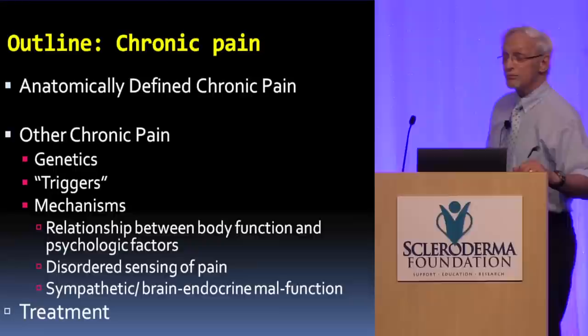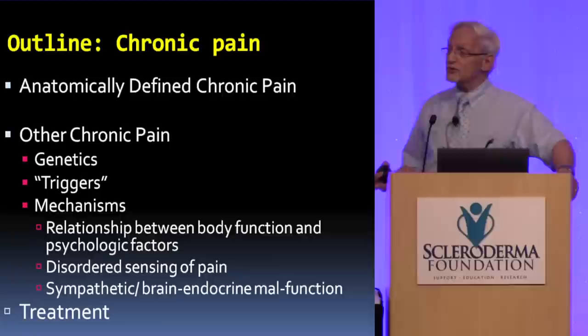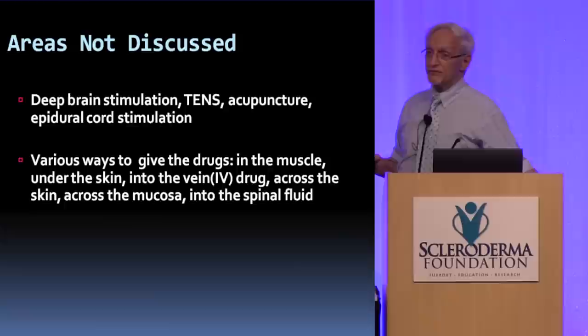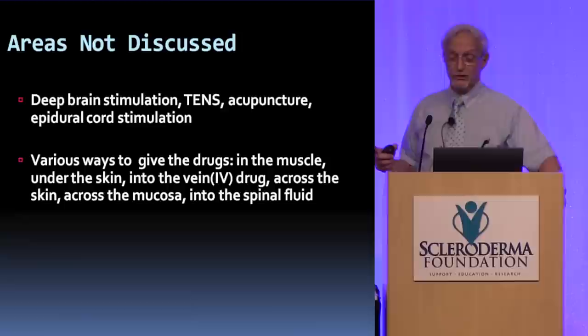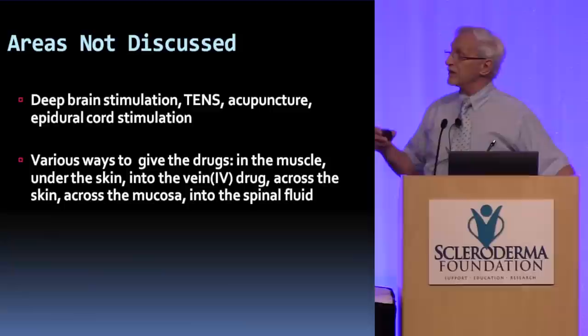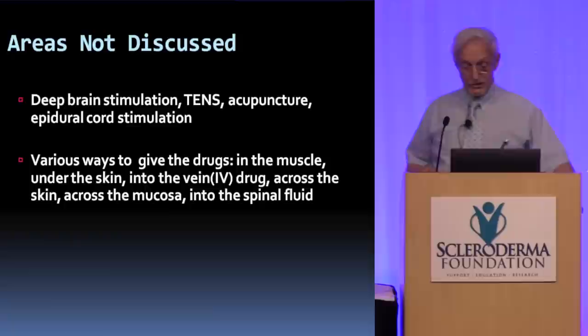Here's what I'm going to talk about specifically: anatomically defined pain, and then the other chronic pain — the genetics, what starts it, what's going on, and finally how to treat it. What I'm not going to talk about are certain aspects of pain — there's just not enough time. I'm not going to talk about transcutaneous nerve stimulation, acupuncture directly, or epidural cord stimulation. All of these are for severe pain and sometimes are very important. And I'm not going to talk about the various ways drugs can be given, such as under the skin, into a vein, across the skin, or in the mouth.